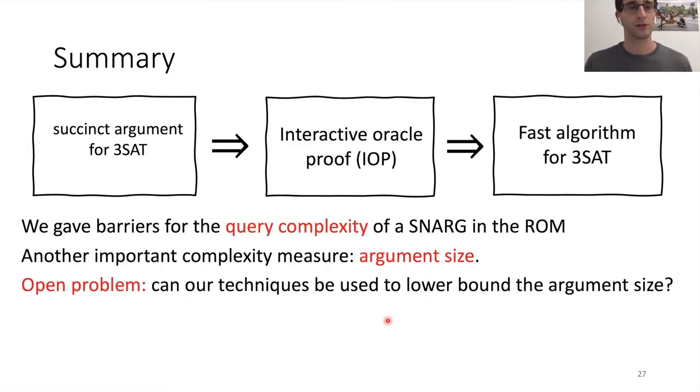So let me just summarize. We have shown that succinct arguments, any succinct argument in the random oracle model implies an IOP with corresponding parameters. If the SNARG was too good to begin with, the IOP has too high soundness, which implies a fast algorithm for 3-SAT, which plausibly does not exist. So this gives barriers for the query complexity of the verifier in SNARGs in the random oracle model.